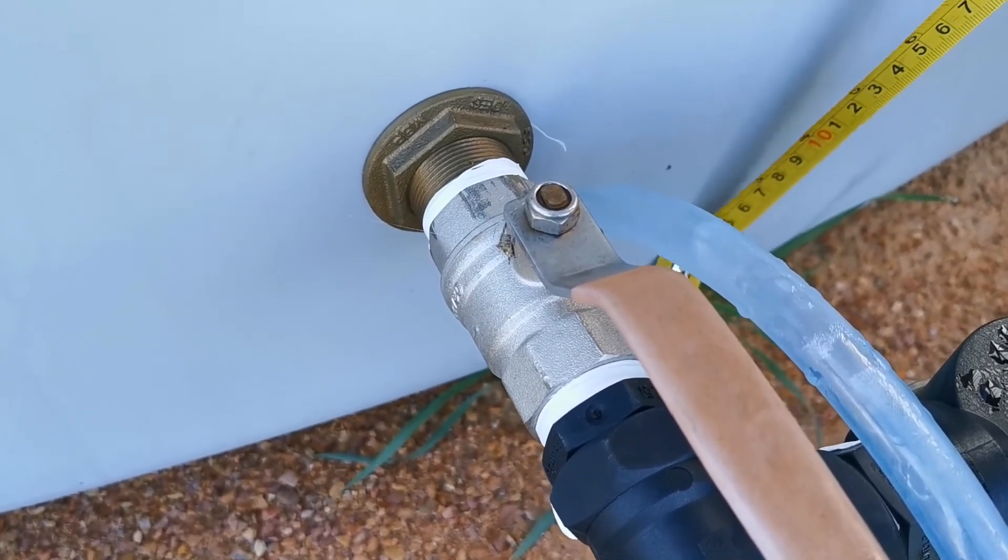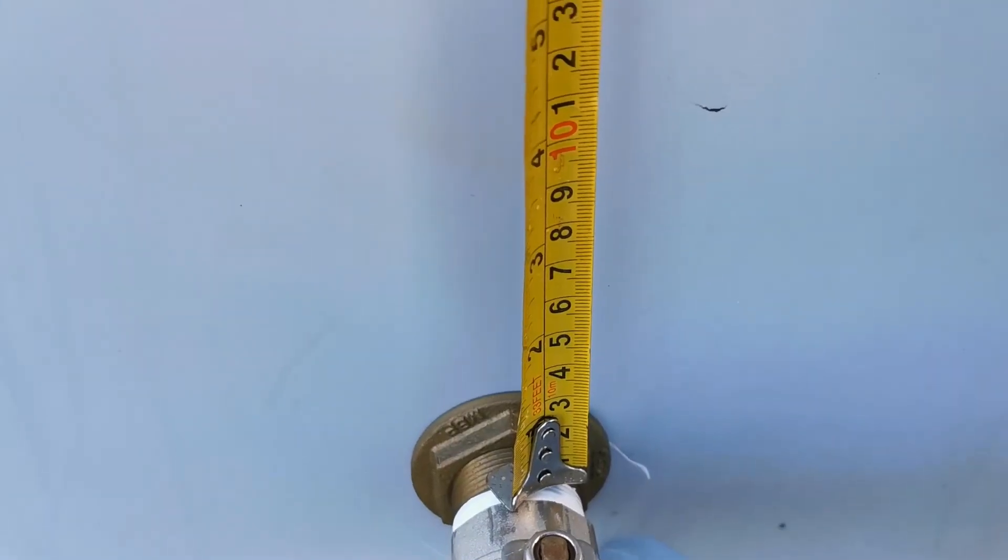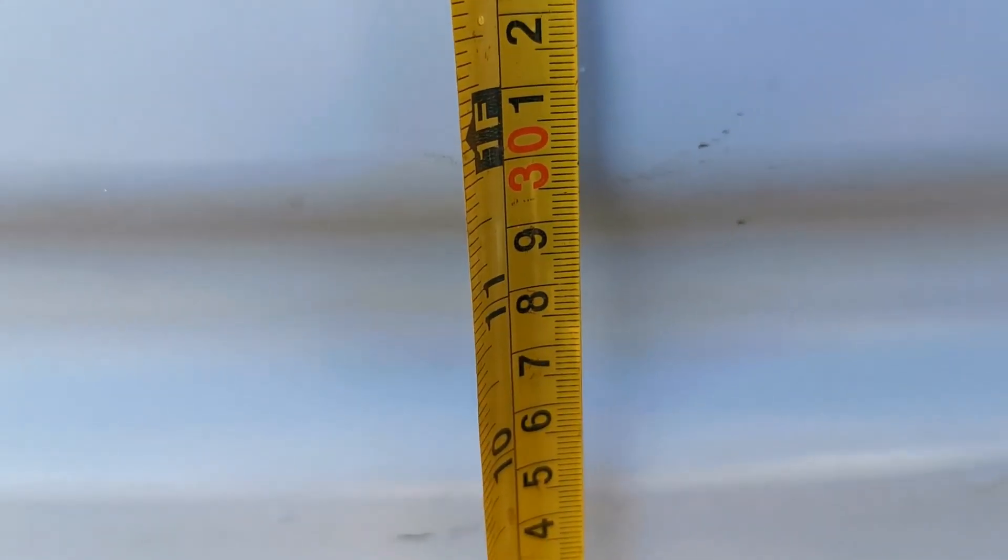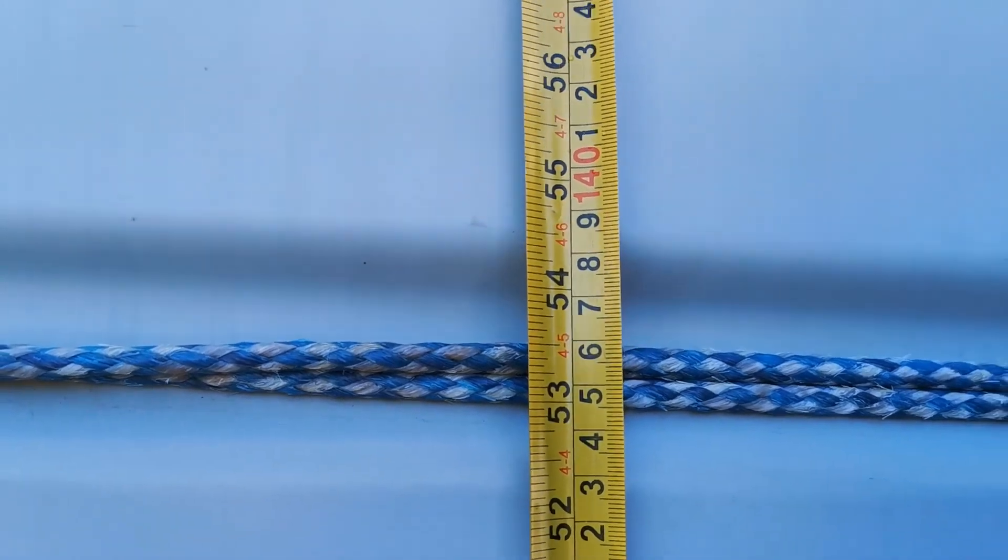The first rib on the tank is at 28 centimeters. The second rib is at 63 centimeters, the third rib is at 100 centimeters, the fourth rib is at 136 centimeters.